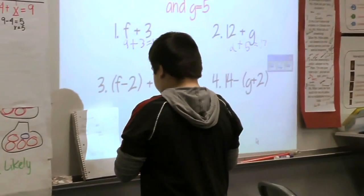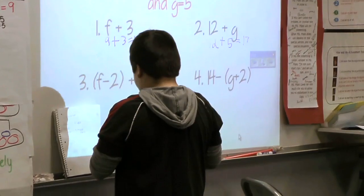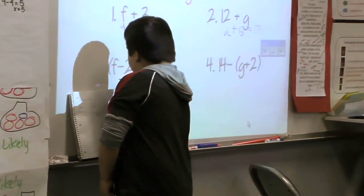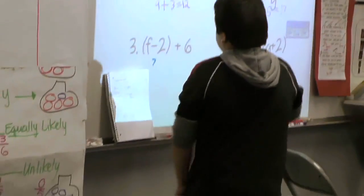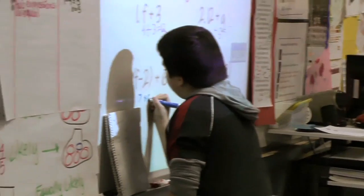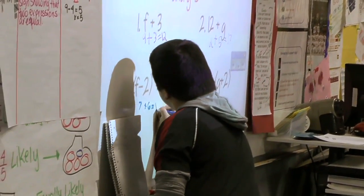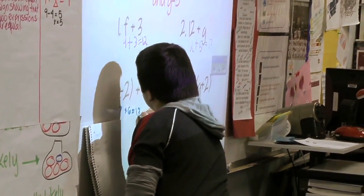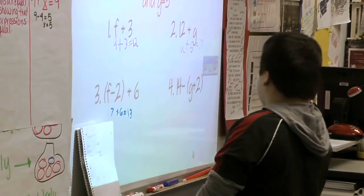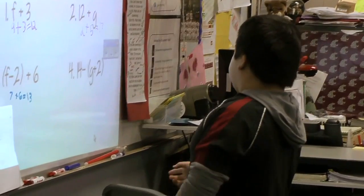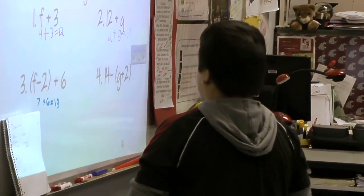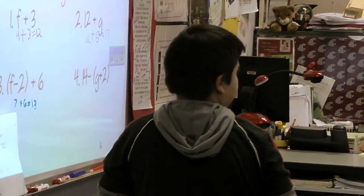For number 3, I did the parentheses first and it came out to 7. And so then it said plus 6 right here, so I did plus 6 and it came out to be 13. Jay, what did you do to get 7? Because f equals 9 and then it said minus 2, so then I got 9 minus 2 and it equals 7. Excellent, good job.